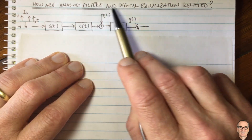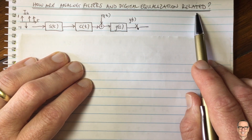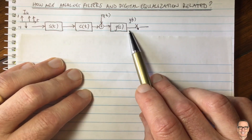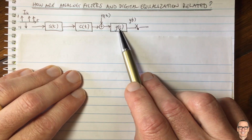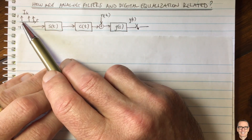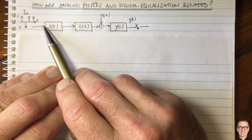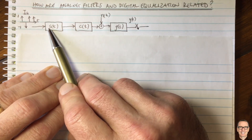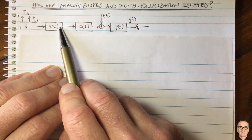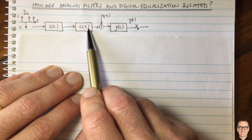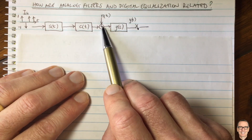How are analog filters and digital equalization related in a digital communications system? We have a standard digital communications system with the transmitter, the channel, and the receiver. The input data is represented as plus and minus ones as delta functions, which are put into the transmit filter. This has the pulse shape of the waveform used to transmit the digital information, and this goes into the channel which has an impulse response.